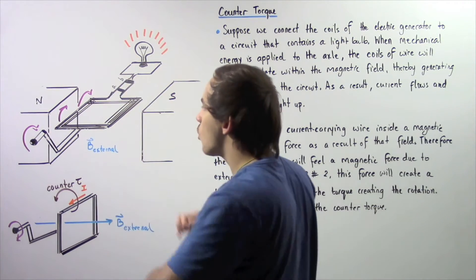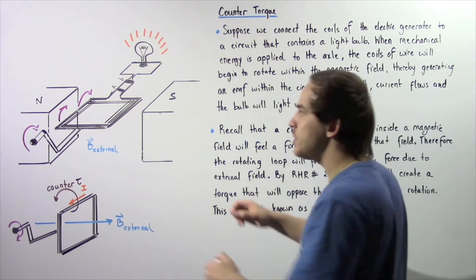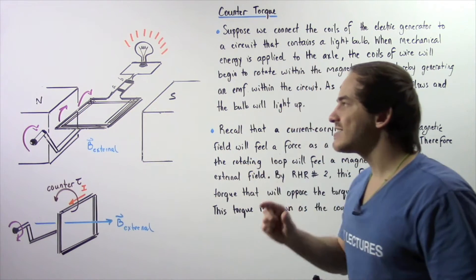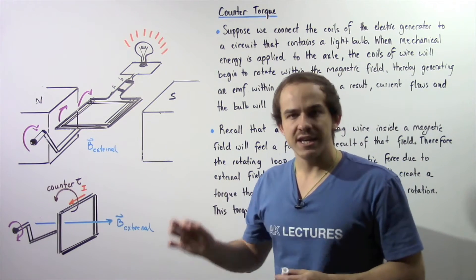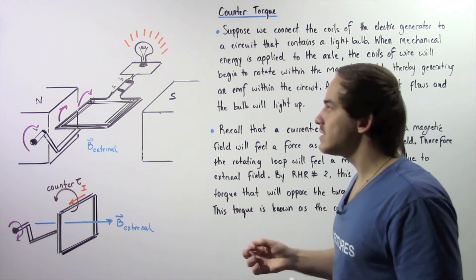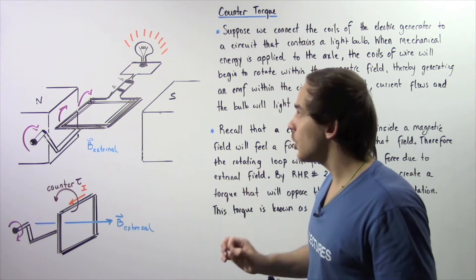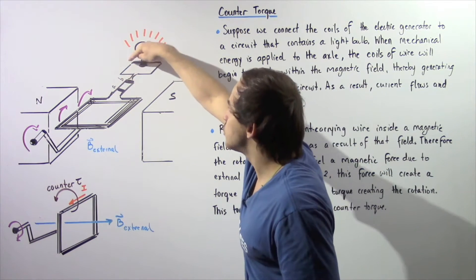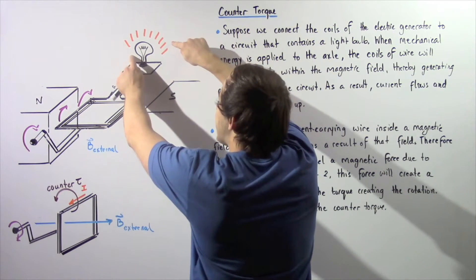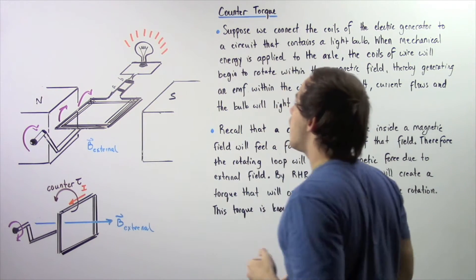As our coils rotate, that will induce an EMF within our electric circuit. As a result of that induced EMF, an electric current will exist within our circuit. That electric current will travel through the closed circuit, powering the light bulb, so our bulb will light up.